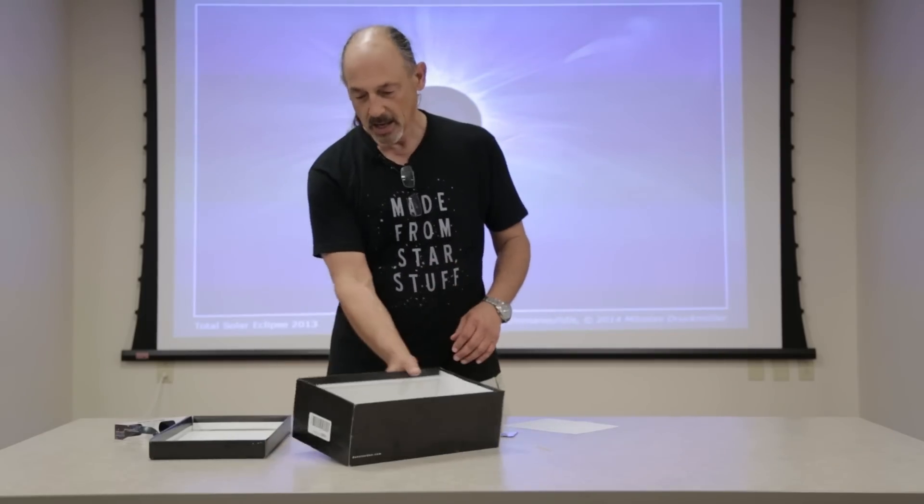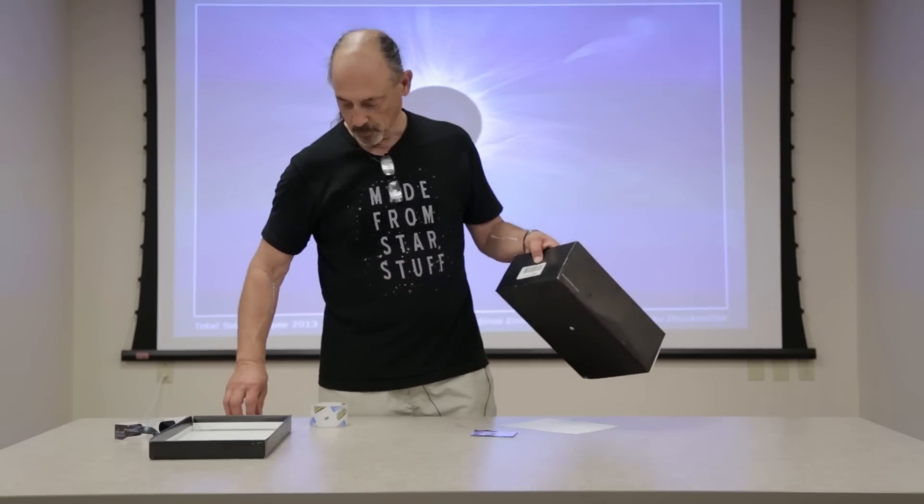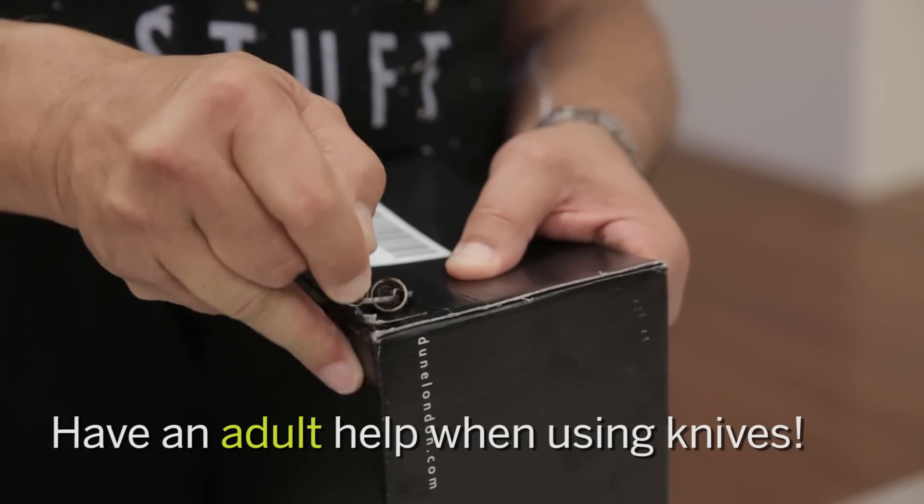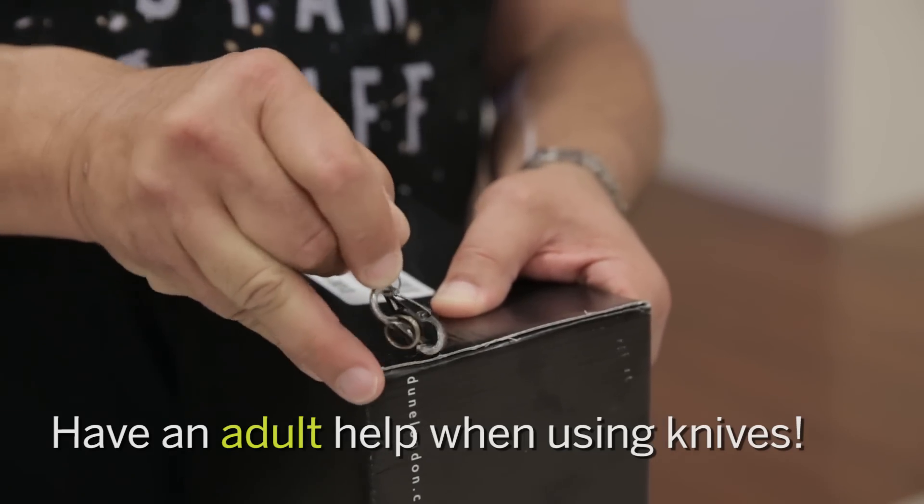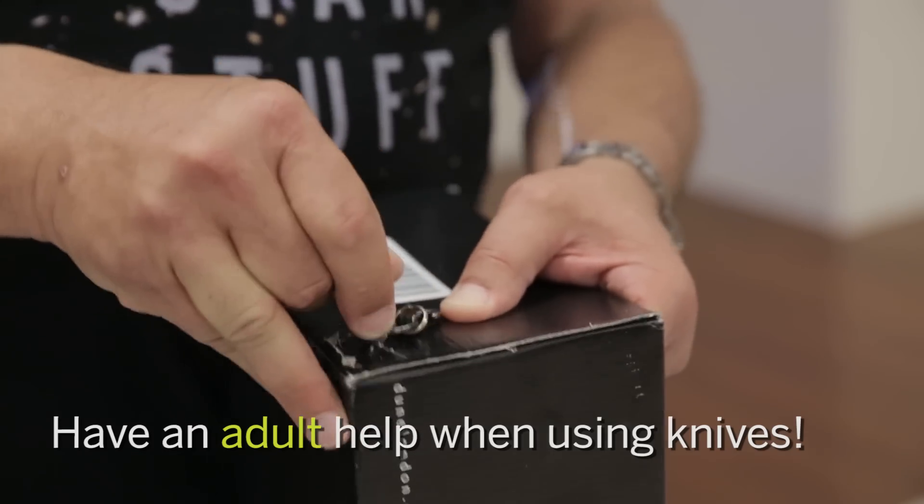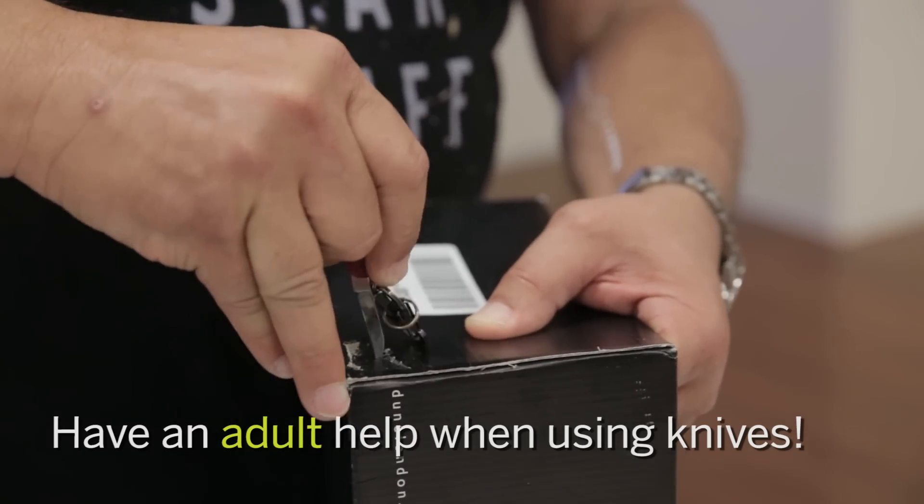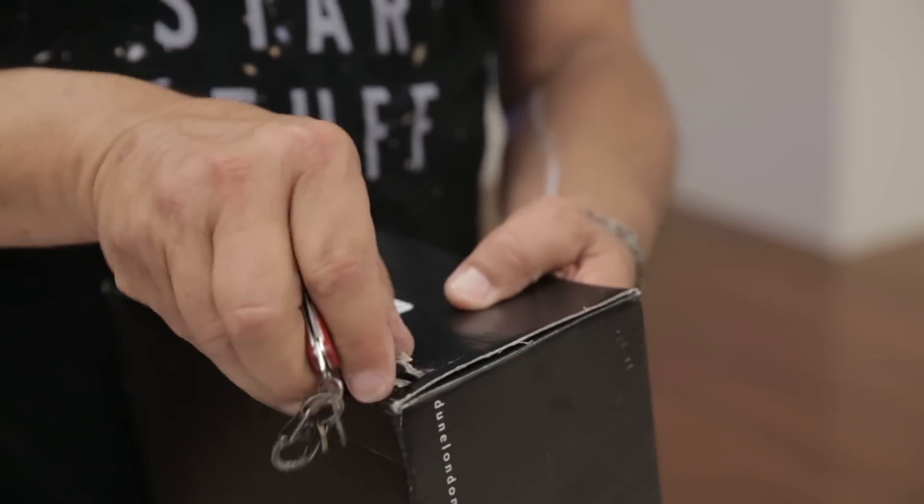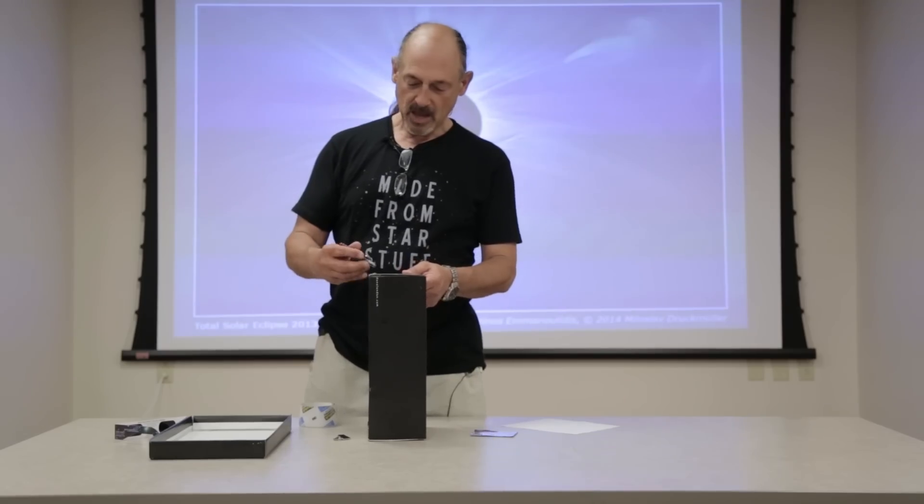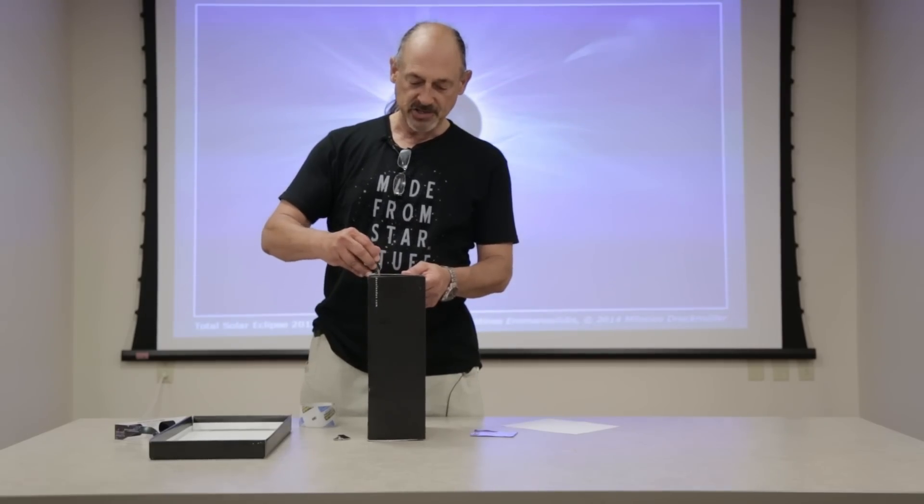The next step is to cut a couple of holes in the opposite side of the shoebox. Try to get the holes as close to the corner of the box, not central. And it needn't matter that it's neat at all. There's my first hole and a similar one on the other side.